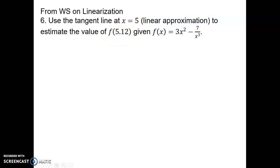I want to show you a couple of examples of linearization. We're going to find the linearization, or the tangent line to the curve, at x equals 5, and then use that linear equation to estimate the value of the curve at 5.12. In today's day and age we could just substitute 5.12 into the equation on a calculator. However, back when Leibniz and Newton were discovering this, they did not have computers or calculators. So this is an easy way to do a quick estimate near the point of tangency. It will only work here because 5.12 is a very small change away from the point of tangency at x equals 5.